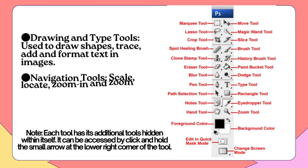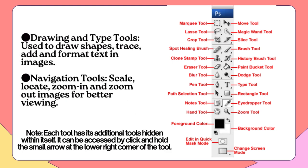Drawing and Type Tools: Used to draw shapes, trace, and add and format text and images. Navigation Tools: Used to Scale, Locate, Zoom In, and Zoom Out images for better viewing. Note: Each tool has additional tools hidden within itself. They can be accessed by clicking and holding the small arrow at the lower right corner of the tool.